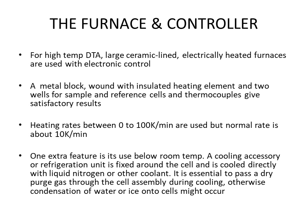The furnace is a metal block wound with an insulated heating element, with two wells — one for sample and one for reference — and together there is a thermocouple sensor. To give satisfactory results, heating rates are maintained between 0 to 100 Kelvin per minute, with a normal rate of about 10 Kelvin per minute. If operating below room temperature, a cooling accessory or refrigeration unit is fixed around the cell and cooled with liquid nitrogen or other coolant. A dry purge gas must be passed through the cell assembly during cooling to prevent condensation of water or ice onto the cell.